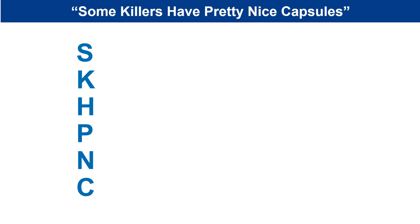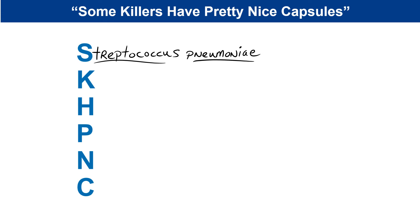It reads: 'Some killers have pretty nice capsules.' The first letter of each word refers to an organism to take special note of. The S is for Streptococcus pneumoniae — the most common of all bacterial species that can cause pneumonia, accounting for approximately 80% of all bacterial pneumonia. Elderly people are particularly at risk. There is a vaccine for this called the PPV vaccine, also known as Pneumovax.